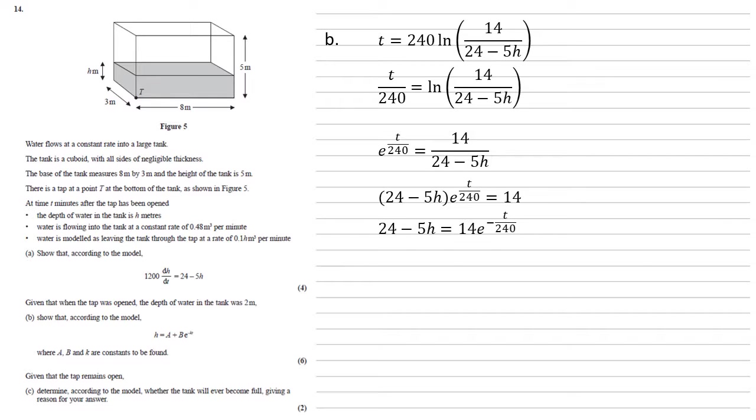Almost there now. We want to get this as h equals. So let's add 5h to both sides and subtract the 14e from both sides. We get 5h is equal to 24 minus 14e to the minus t over 240. Dividing through by 5 gives us that h is equal to 24 over 5 minus 14 over 5 times e to the minus t over 240, which is in the form that was required.